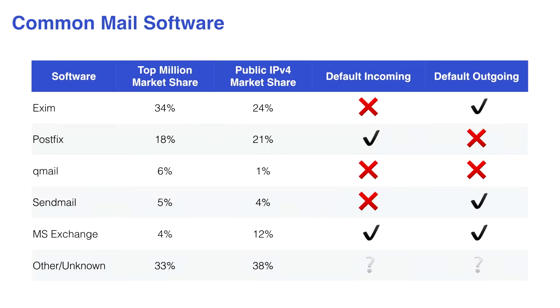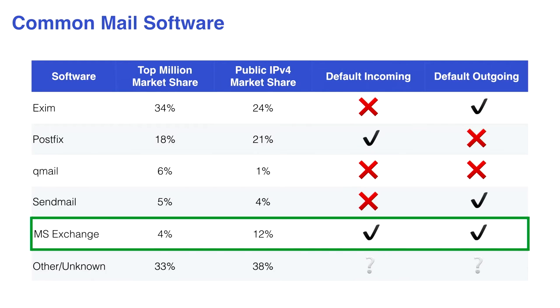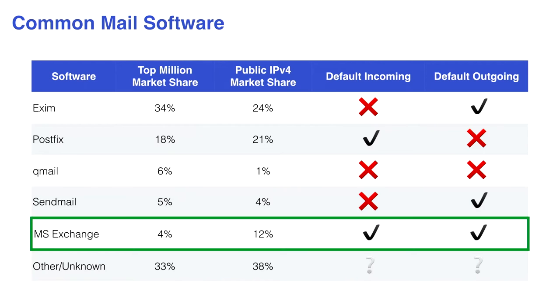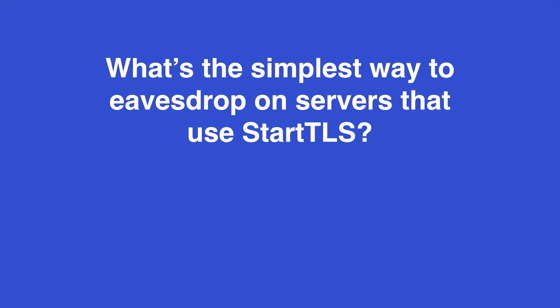Es ist ziemlich traurig – die übliche E-Mail-Software die Leute verwenden unterstützt TLS auch nicht richtig. Das Einzige das wirklich beides richtig unterstützt ist Microsoft Exchange. Man muss natürlich ein richtiges Zertifikat haben, aber bei ausgehendem TLS gibt es wirklich keinen Grund, warum ein E-Mail-Server das nicht einfach machen sollte. STARTTLS schützt einen vor passivem Überwachen, aber sonst nichts – es schützt nicht vor aktiven Angriffen.